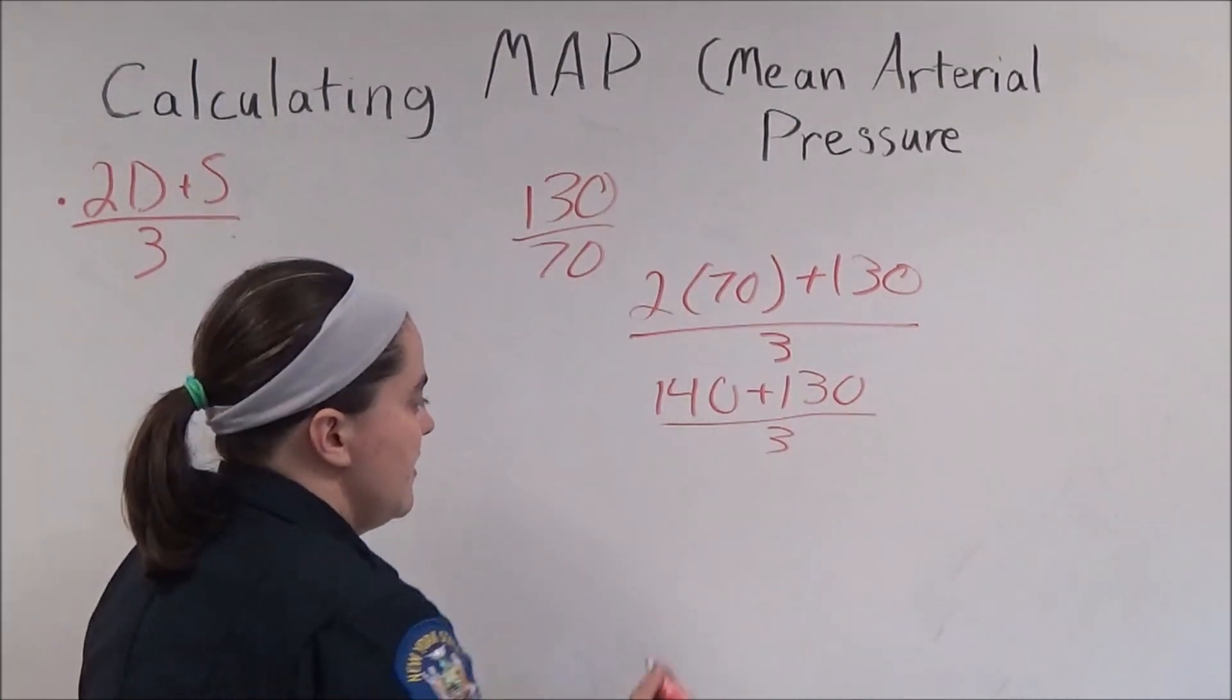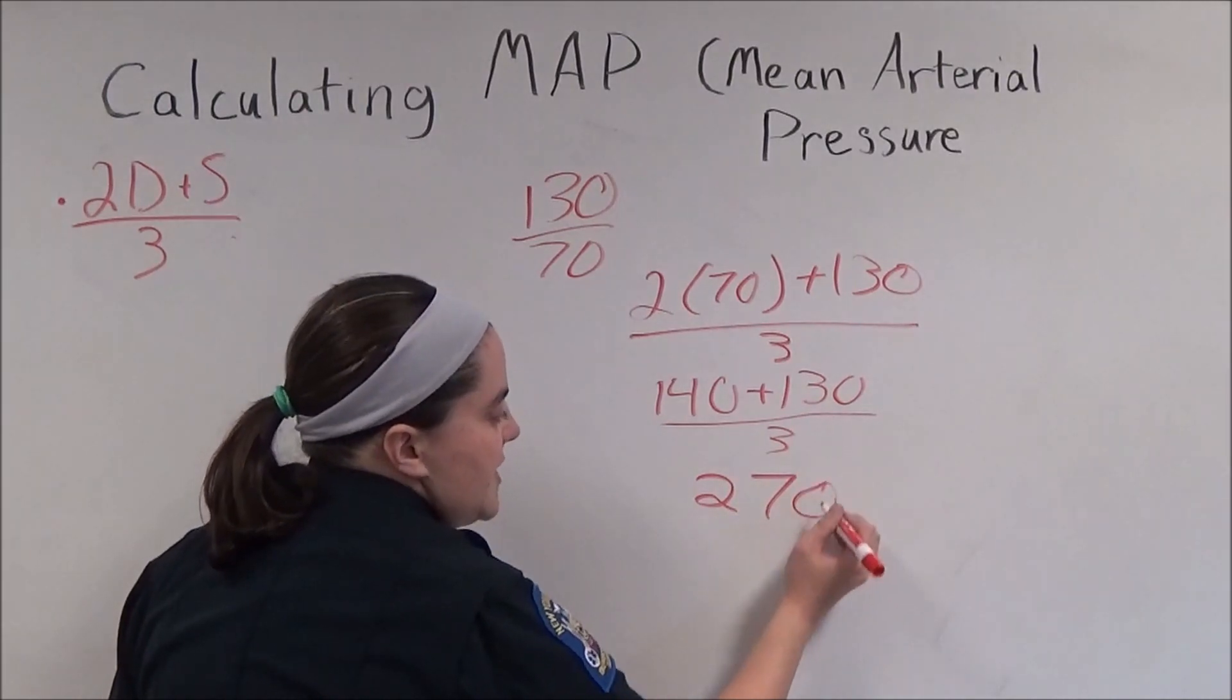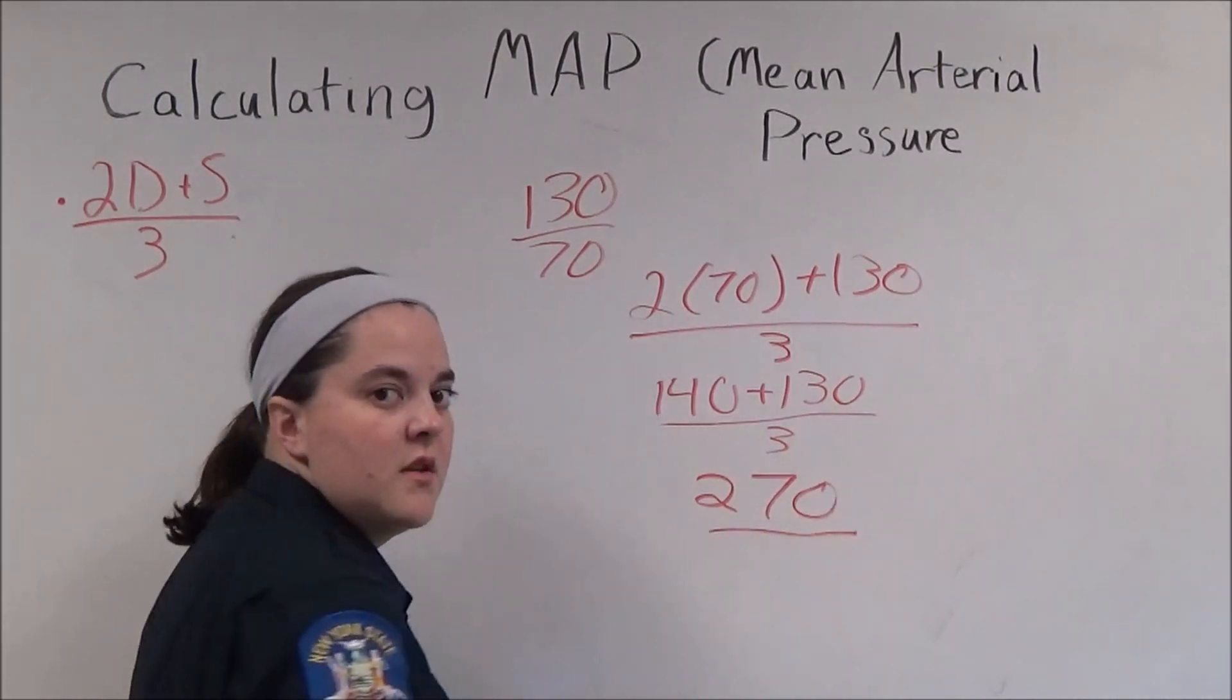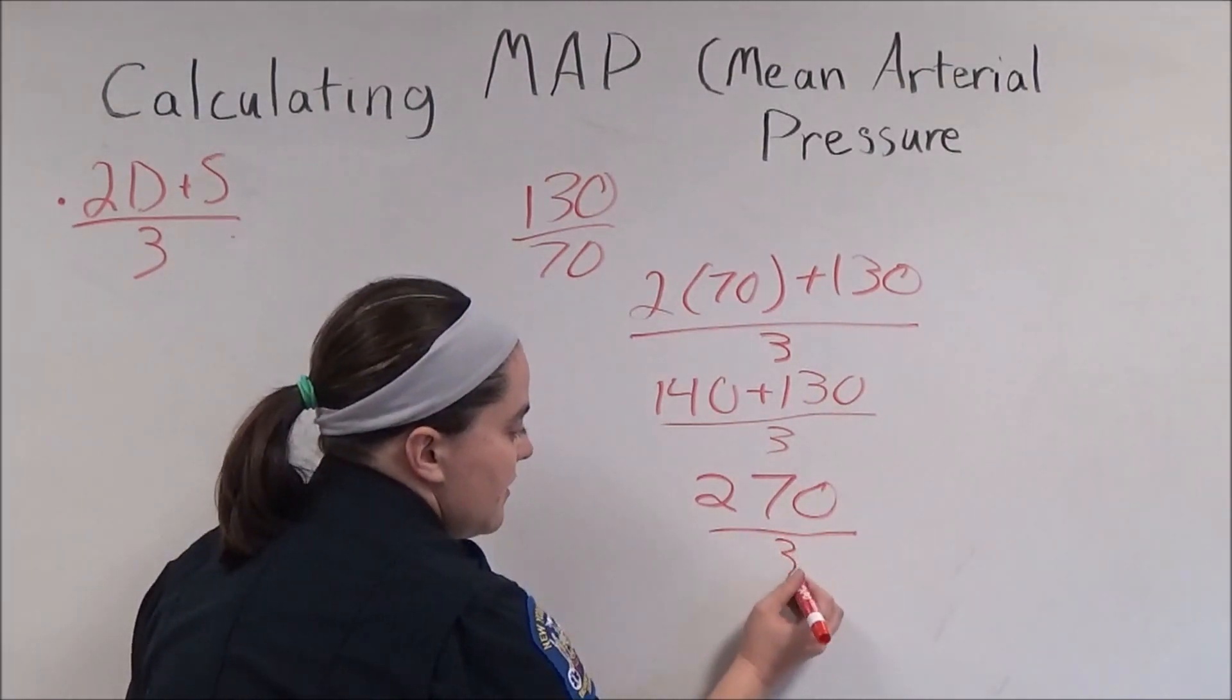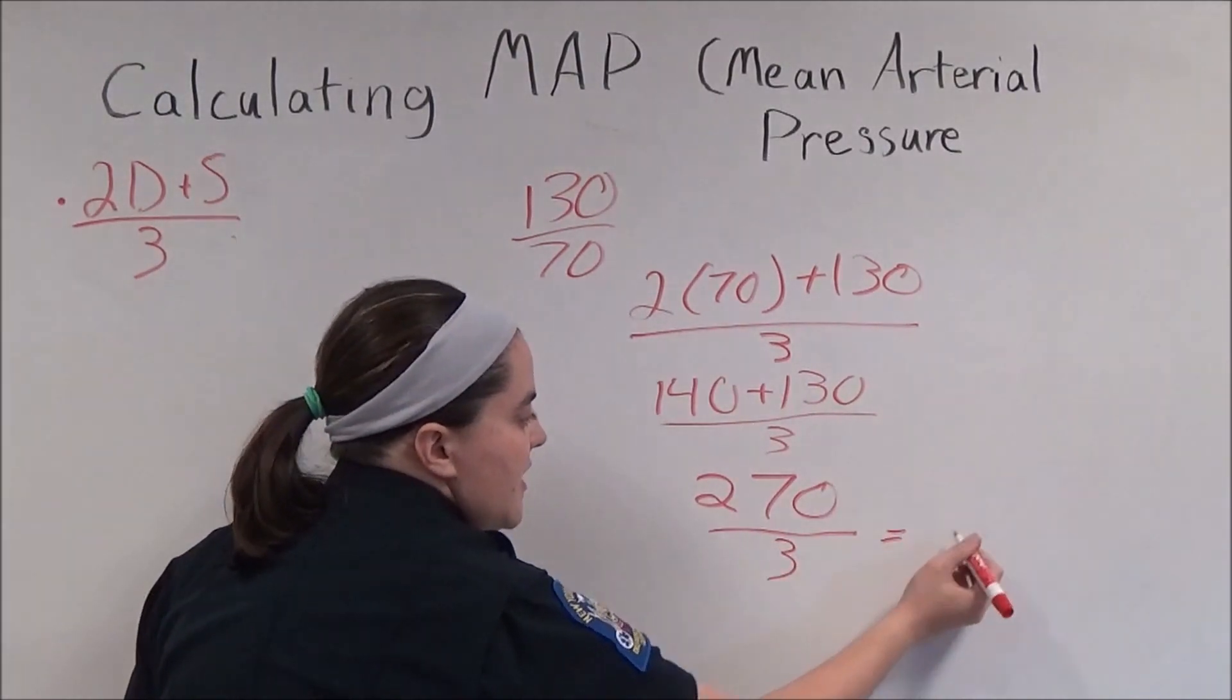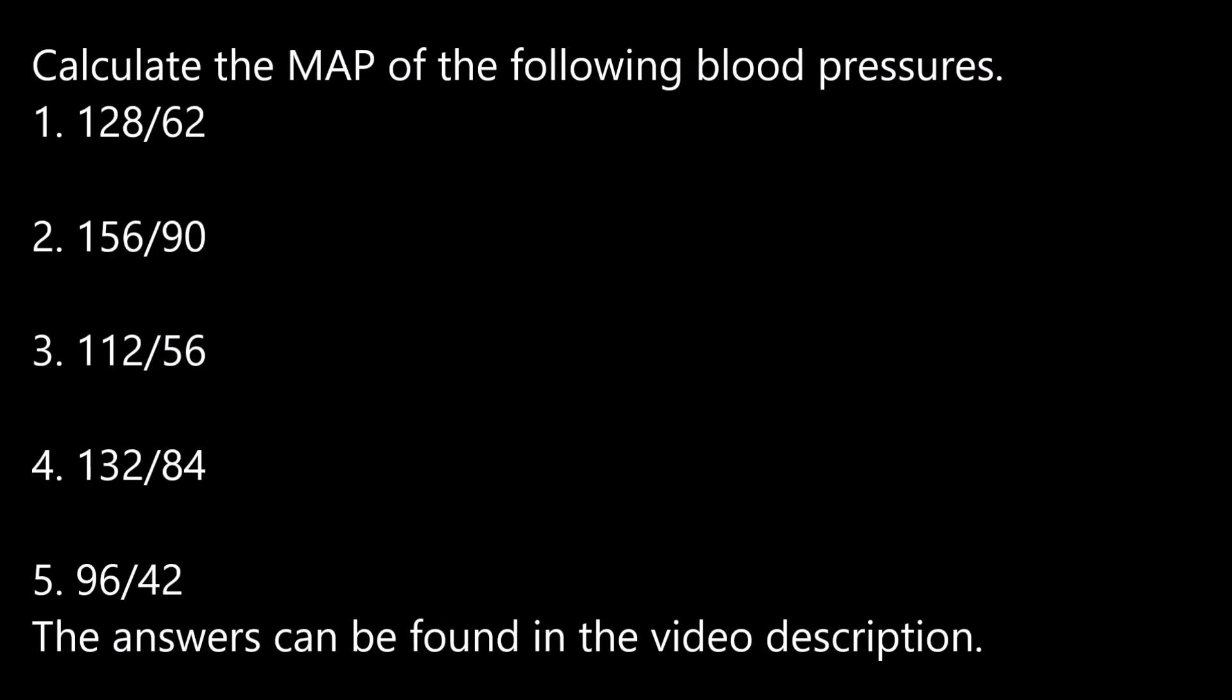140 plus 130 is 270. 270 divided by 3 is 90. So here we are!